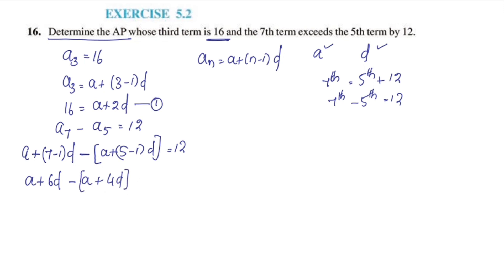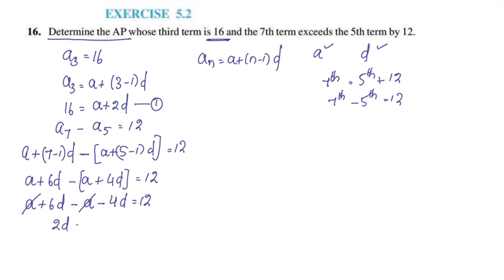Opening the bracket: A + 6d minus A minus 4d is equal to 12. The A terms cancel, leaving 6d minus 4d equals 2d, so 2d is equal to 12.